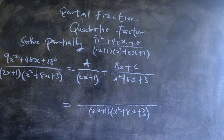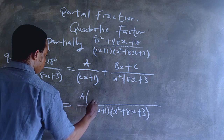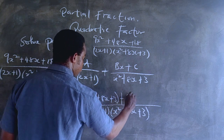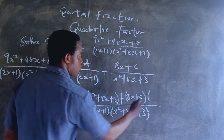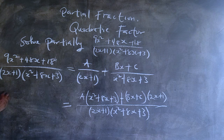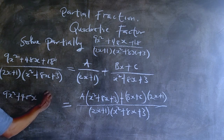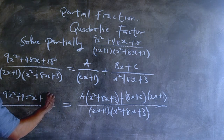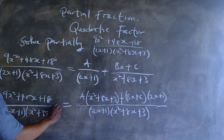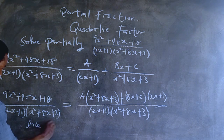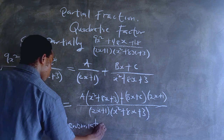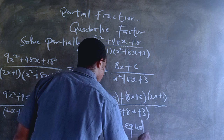The quadratic factor would take the constant bx plus c. So finding the LCM: for the factor 2x plus 1, this gives x squared plus 8x plus 3, and we multiply that by a. Then we have bx plus c multiplied by 2x plus 1. On the other side, we have 9x squared plus 48x plus 18, all over 2x plus 1 multiplied by x squared plus x plus 3. You will notice the denominators are equal, so we can equate the numerators and focus on solving that.